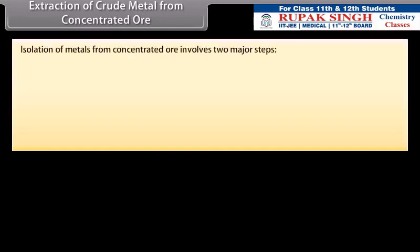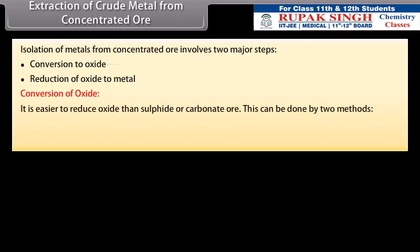Extraction of crude metal from concentrated ore. The concentrated ore must be converted into a form which is suitable for reduction. Oxides are easier to reduce. Thus, isolation of metals from concentrated ore involves two major steps: conversion to oxide and reduction of oxide to metal. Conversion of oxide: It is easier to reduce oxide than sulphide or carbonate ore. This can be done by two methods: calcination and roasting.